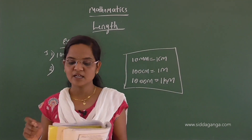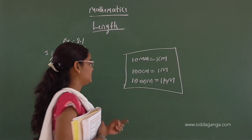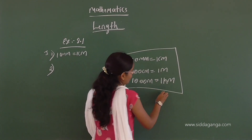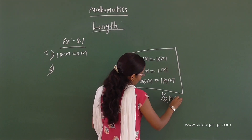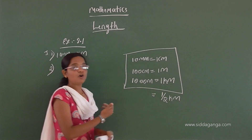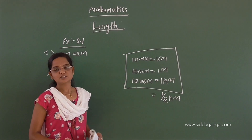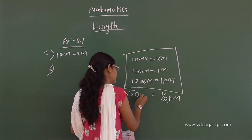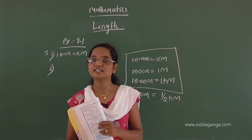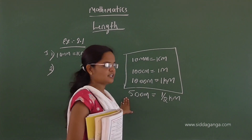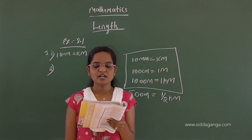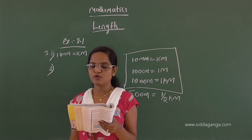How many meters make half a kilometer? 1 kilometer equals 1000 meters. So half a kilometer equals 500 meters. Next question: how many centimeters make 3/4 of a meter?